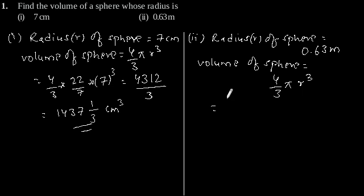Putting the value of r, we will get 4/3 × 22/7 × 0.63³.